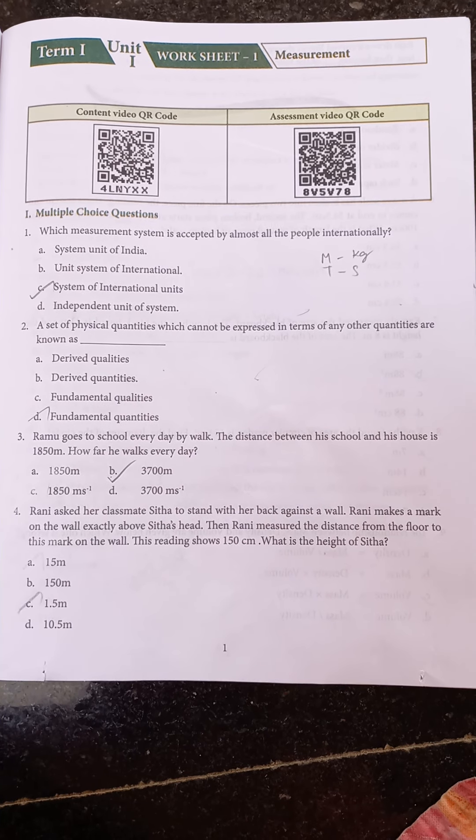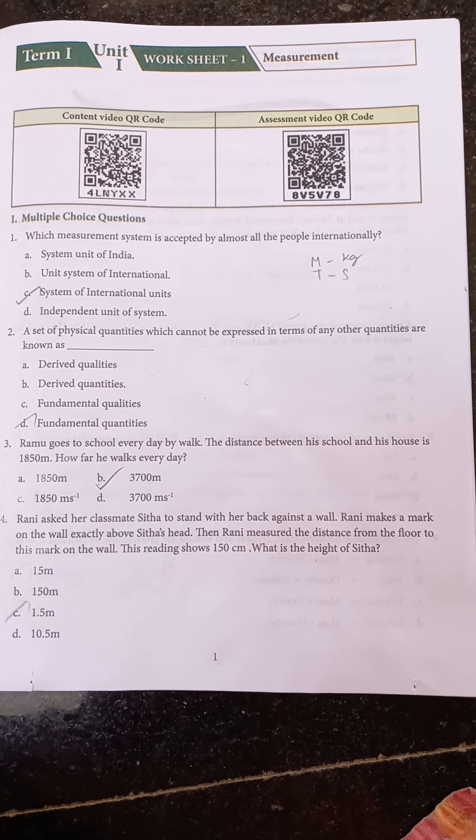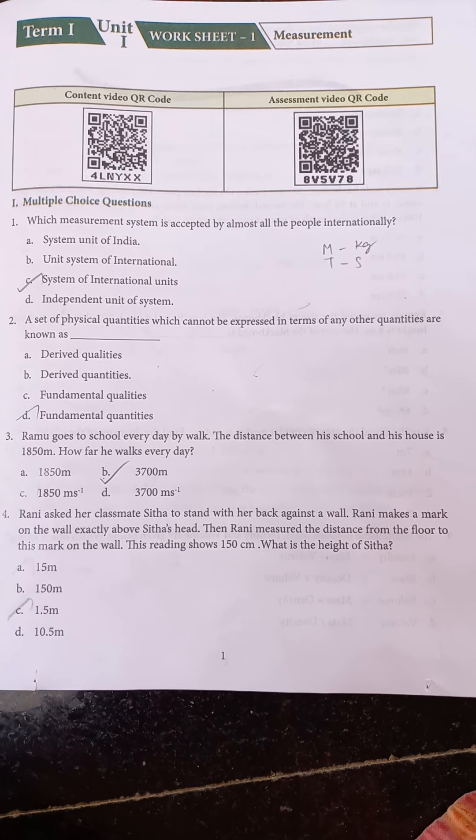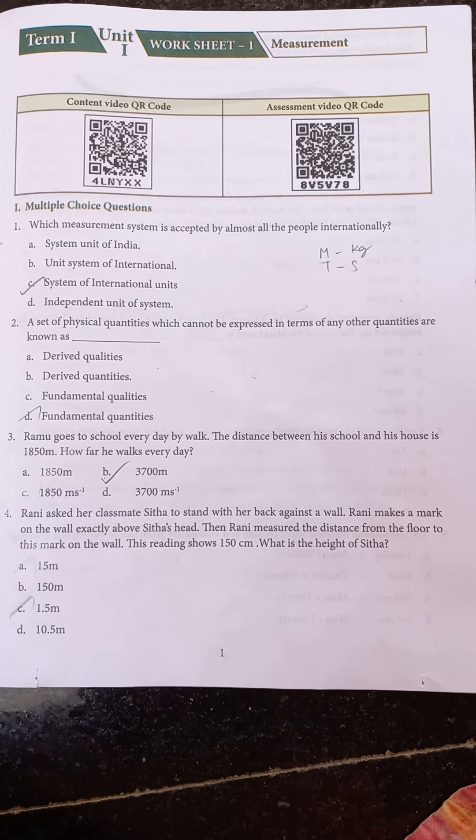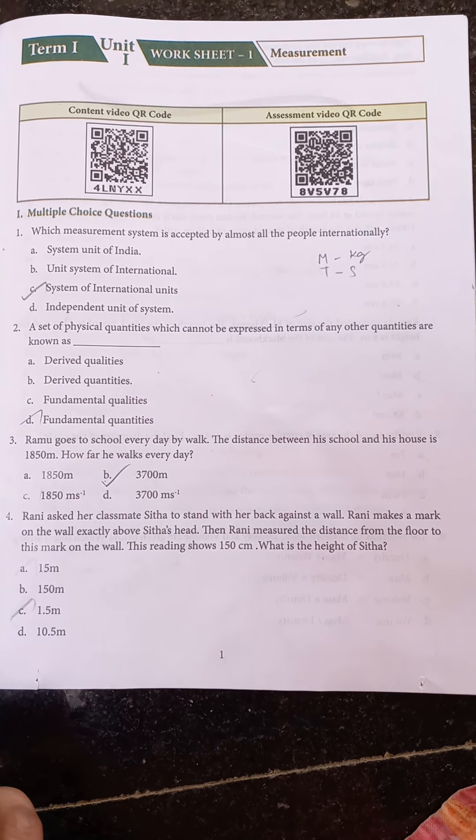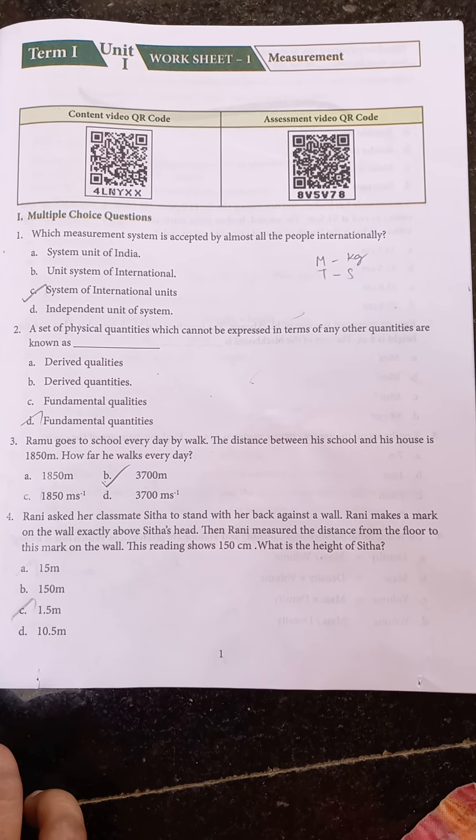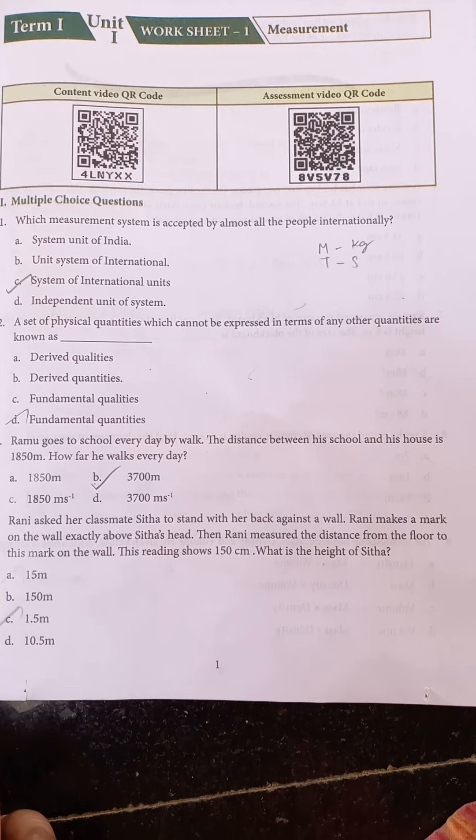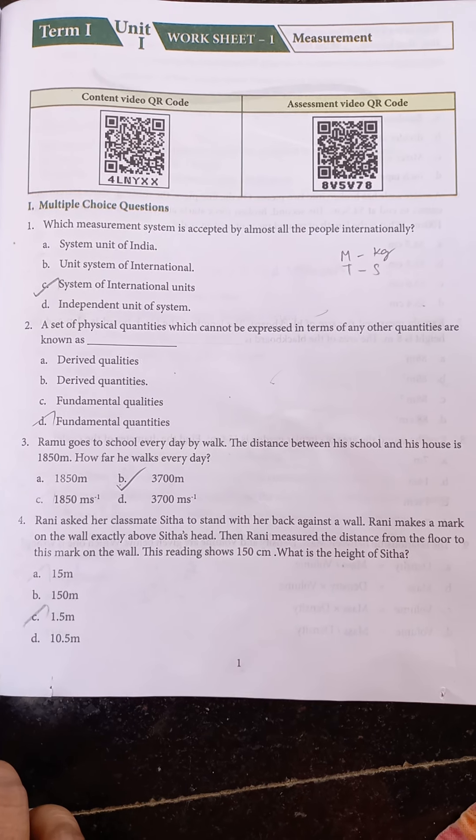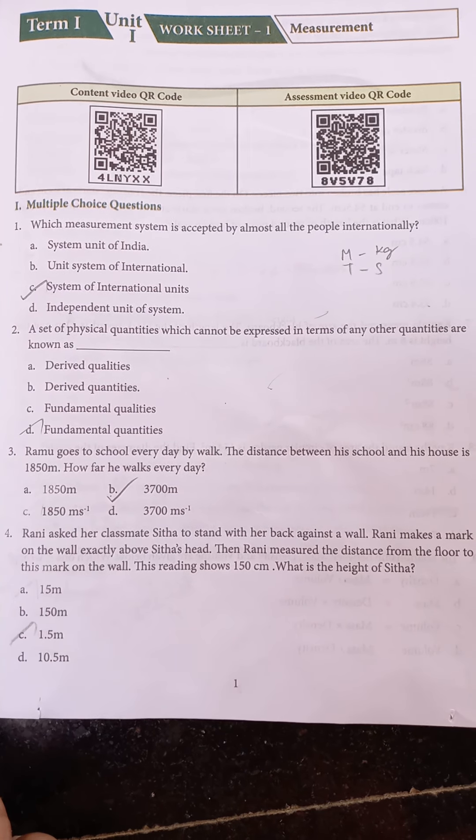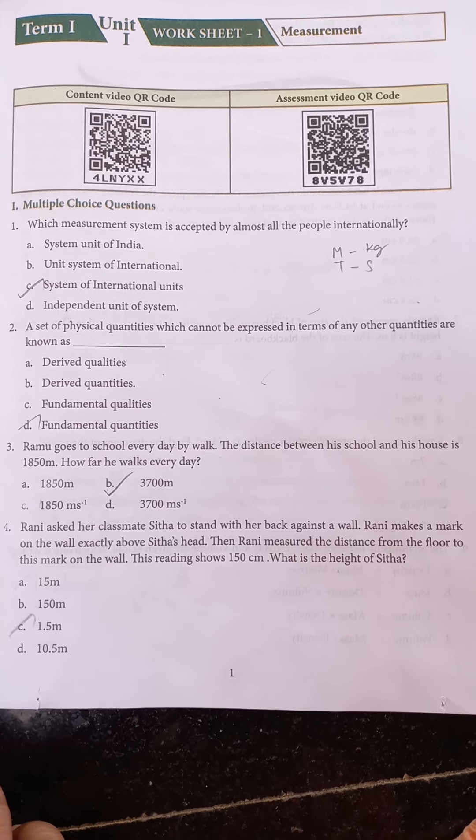First question is multiple choice question. Which measurement system is accepted by almost all the people internationally? The answer is System of International Units. A set of physical quantities which cannot be expressed in terms of any other quantities are known as fundamental quantities.